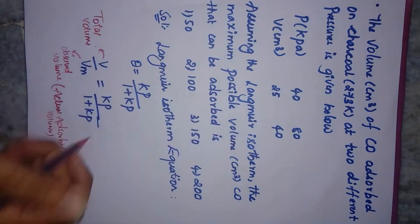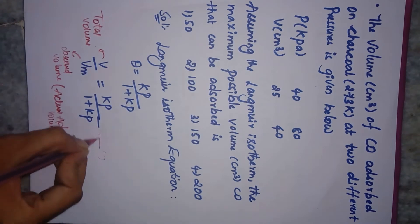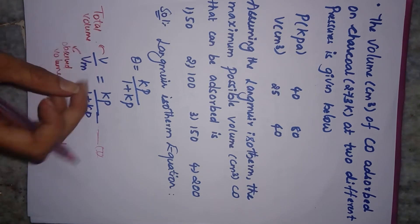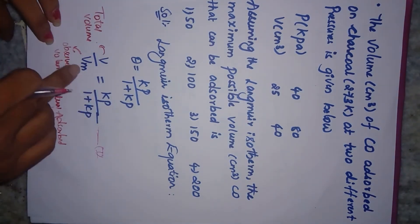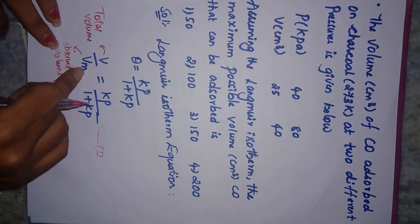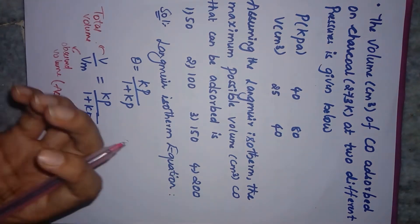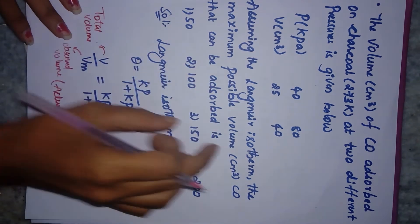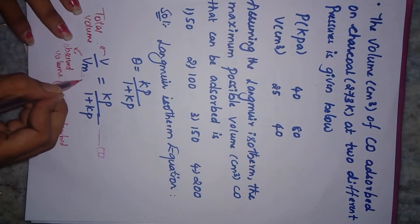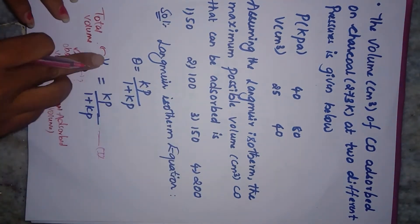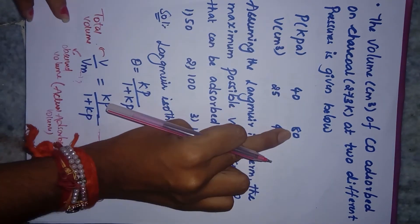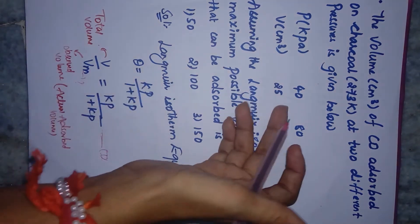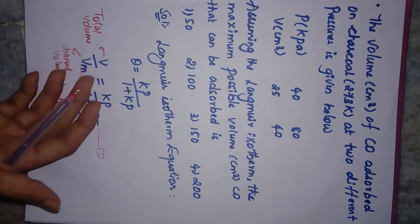In this equation, V is the total volume and Vm is the observed or actual observed volume. This Vm is what we have to find - the maximum possible volume of CO that can be observed. V is the given volume and p is the given pressure. We'll take these two values and substitute them into this equation.